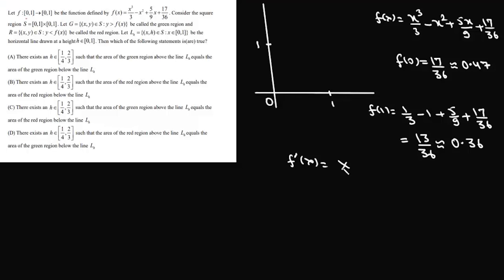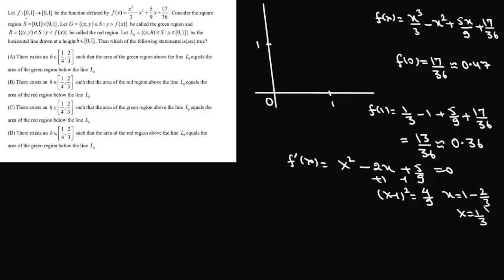If we differentiate, f'(x) = x² - 2x + 5/9. Setting this equal to 0 and completing the square by adding and subtracting 1, we get (x - 1)² = 4/9, so x = 1 ± 2/3. We discard the value greater than 1, keeping x = 1/3. Then f(1/3) = 181/324, which is nearly 0.56.